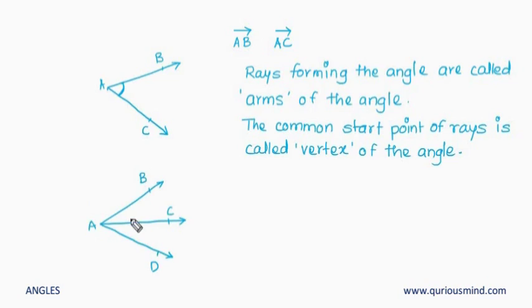So here I have three rays. Each one of them have start point as A and they form three different angles. These two rays form one angle and these two rays also form one angle.